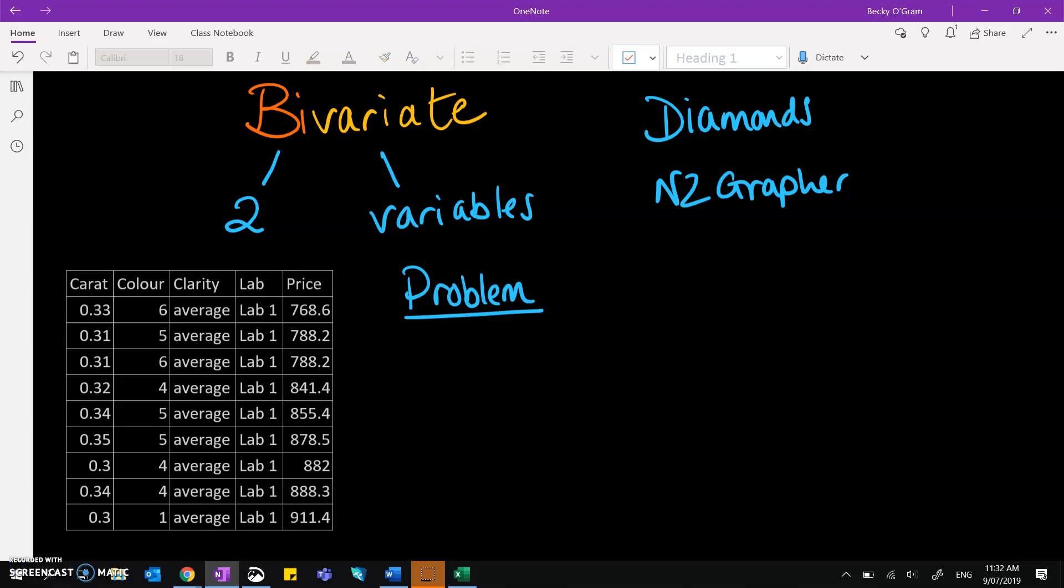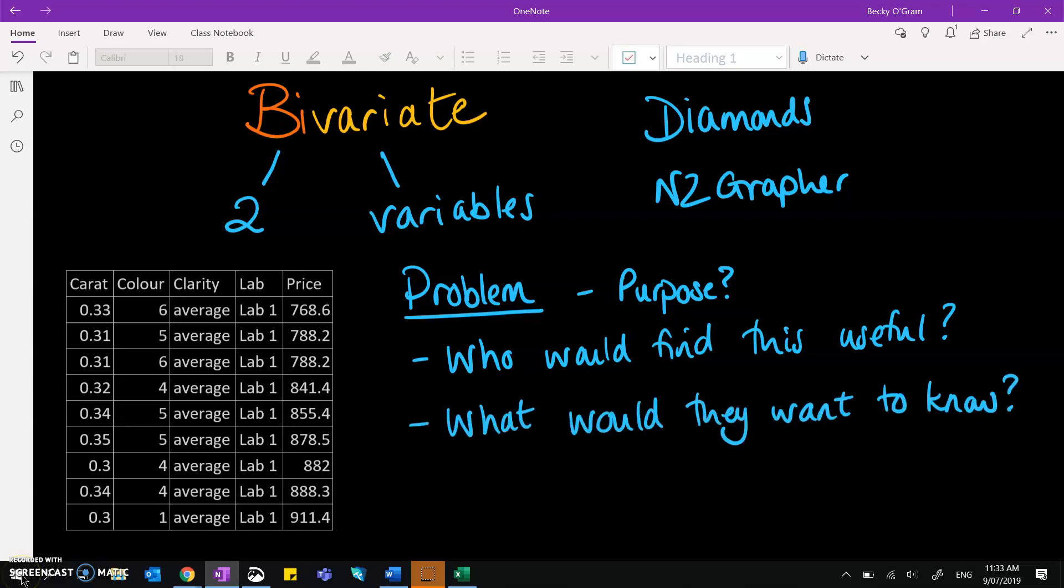We're going to follow the PPDAC cycle to complete our project, starting with problem. And under the problem we need to think, what is my purpose? So asking yourself these questions might help you to define your purpose and decide on the variables: Who would find this useful? What might they want to know about it? And finally, what research is out there already?